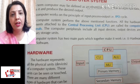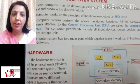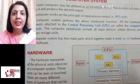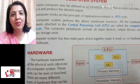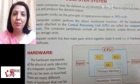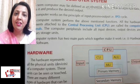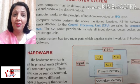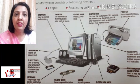A computer basically has two main parts: hardware and software. Hardware represents all the physical units of the computer. It is very simple to recognize hardware — whatever devices you can see and touch are the hardware part. You can see and touch a keyboard, a monitor, and chips inside the CPU — all those are part of hardware.